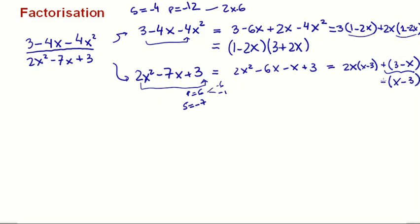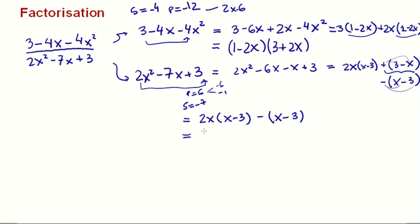Notice that negative x plus 3 is the same as negative times x minus 3. If I change the sign outside and flip all the signs inside, it's still the same thing. We want this to be x minus 3 to match the first group. So continuing on the next line: 2x times x minus 3, minus 1 times x minus 3. The like term is x minus 3 — on the first part we're multiplying by 2x, and on the second by negative 1 — there's a hidden 1 there.